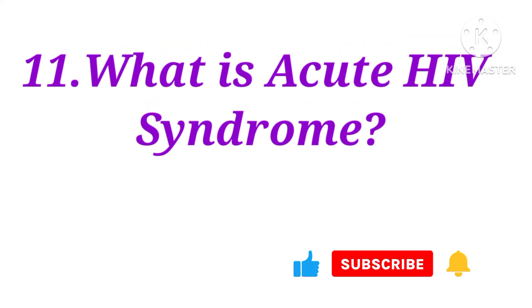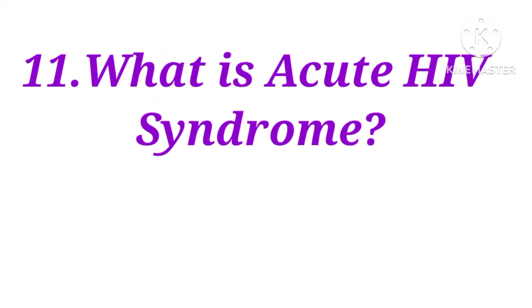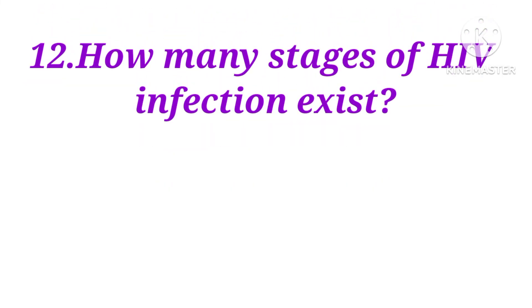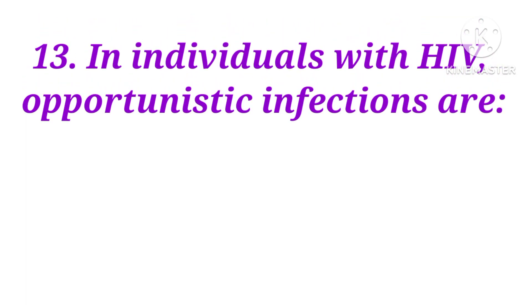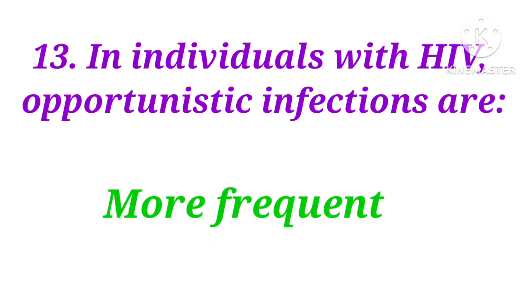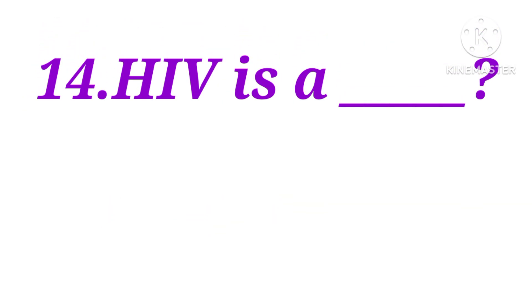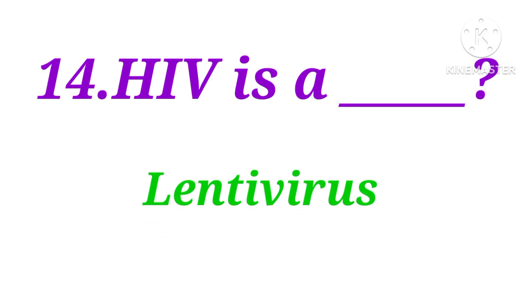What is acute HIV syndrome? The stage immediately after HIV infection when the patient falls ill. How many stages of HIV infection exist? Three stages. In individuals with HIV, opportunistic infections are more frequent. HIV is a lentivirus.